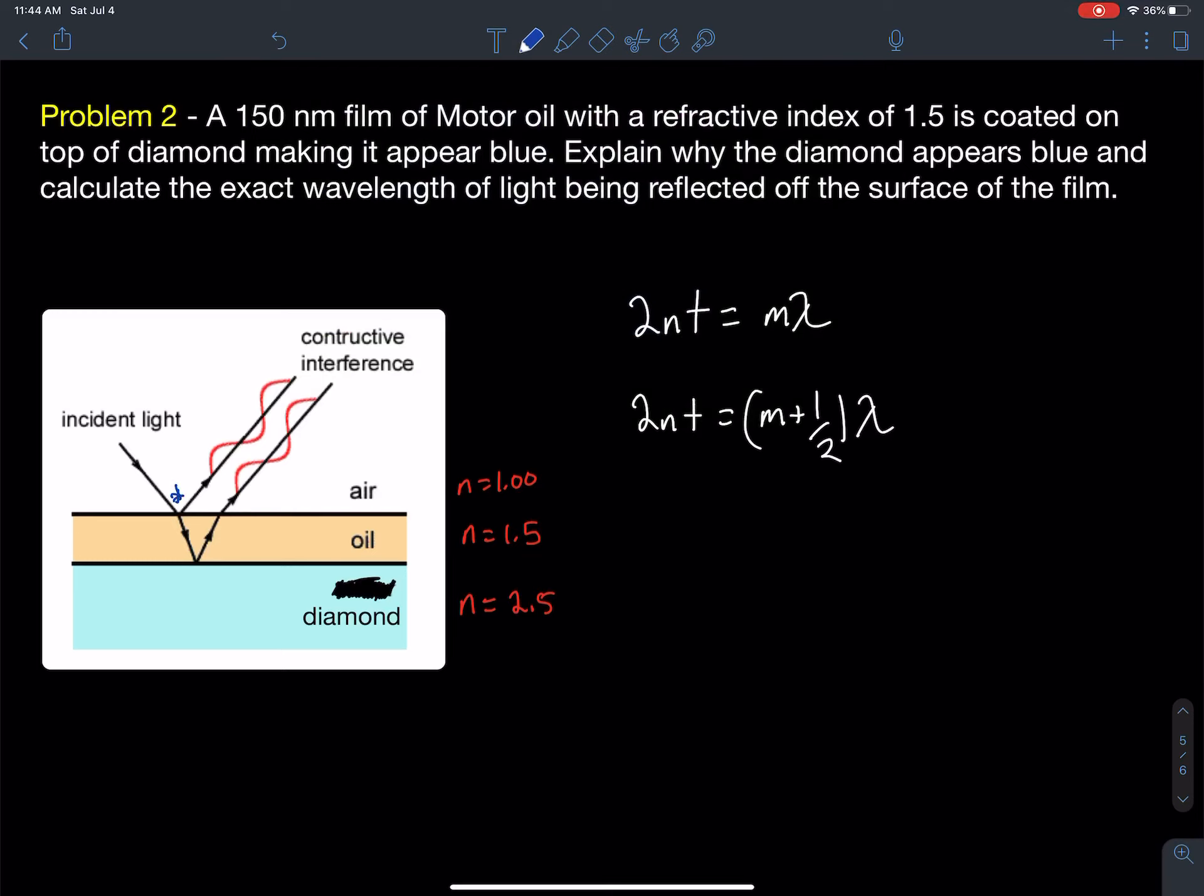I have a phase shift at that reflection. We'll see if we have a phase shift. Let's take a look at those two reflections. Here I'm going from a low refractive index to a high refractive index at that interface. So that would be a phase shift of one-half of a wavelength.